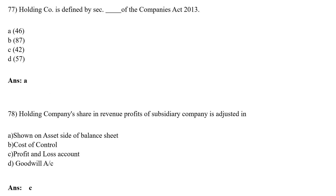Holding Companies are defined by which section of the Companies Act 2013? Option A: 46, Option B: 87, Option C: 42, Option D: 57. The correct answer is Option A, 46. Holding Companies are defined by Section 46 of the Companies Act 2013.